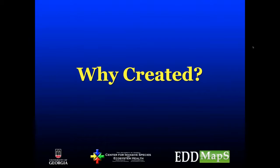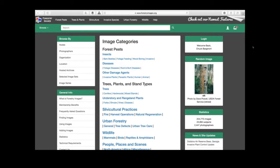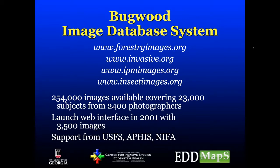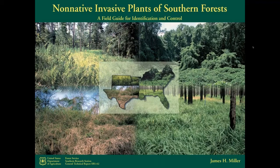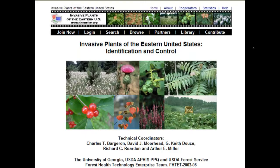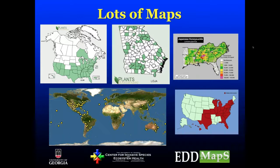EDMAPS was created at the University of Georgia with input from many groups. For many years we collected slides and information about different species, wrapped into photo CD products, ultimately into the forestry images and other Bugwood image systems. A lot of that was focused on forest health to begin with, which grew into invasive plants being a bigger topic. We released products including the Invasive Plants of Eastern United States CD-ROM, but we were always missing good maps.